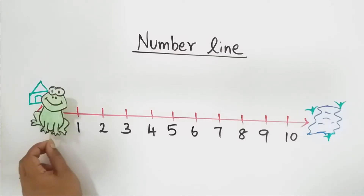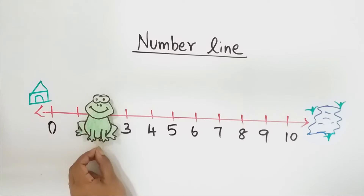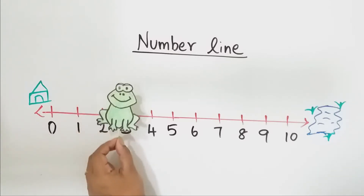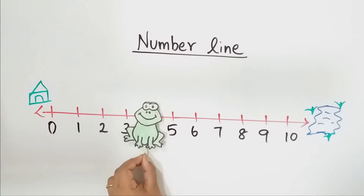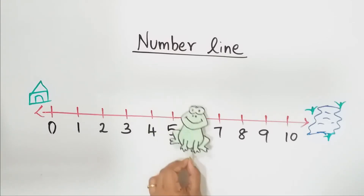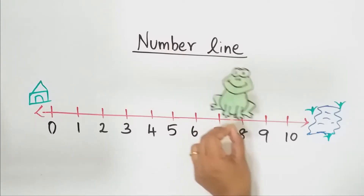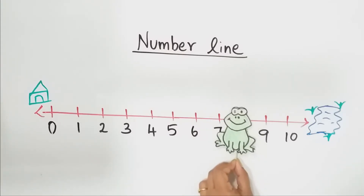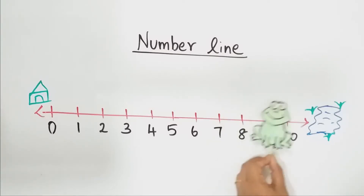Which is the after number of zero? One! Which is the after number of one? Two! Which is the after number of two? Three! Which is the after number of three? Four! Which is the after number of four? Five! Which is the after number of five? Six! Which is the after number of six? Seven! Which is the after number of seven? Eight! Which is the after number of eight? Nine! Which is the after number of nine? Ten!